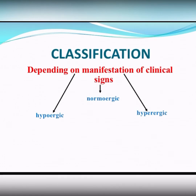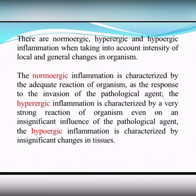The next principle of classification is depending on manifestation of clinical signs. It may be hypoergic, normoergic, and hyperergic types of inflammation.